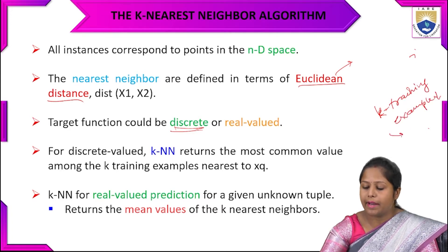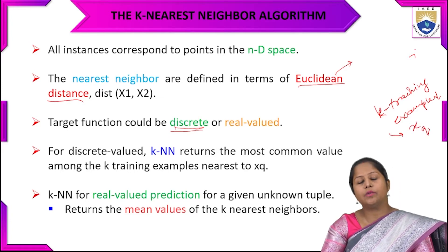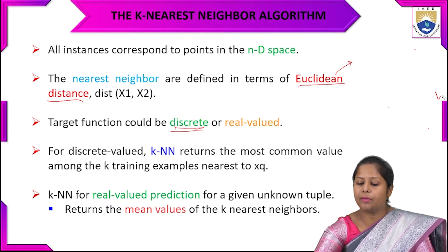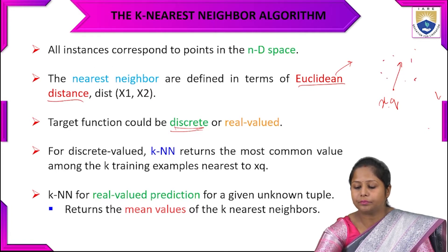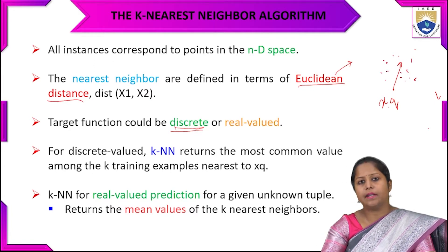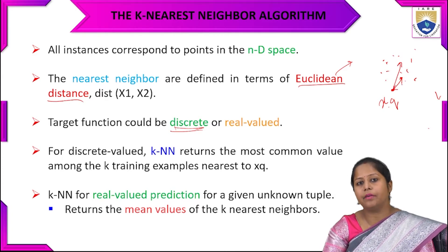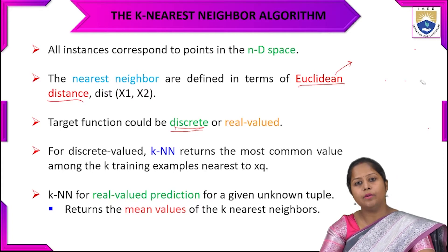All nearest neighbors near the query point x_q are found. From x_q we calculate the nearest neighbor. If there are points in some classification, the distance from one neighbor to another is measured on the basis of Manhattan or Euclidean distance. That will be the x_q point.